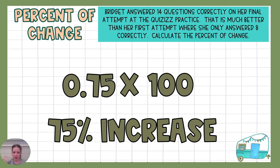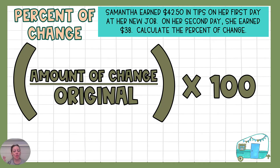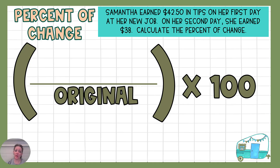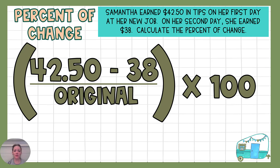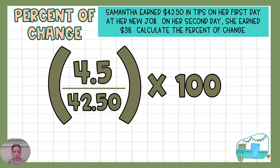What happens, though, when it doesn't get better — when it's not an increase? Let's take a look at Samantha. She earned $42.50 in tips on her first day at her new job. On her second day she earned $38. Calculate the percent of change. Everything's going to be the same — we find the amount of change, the difference between $42.50 and $38, and divide by the original number, her tips on that first day, which is $42.50. $42.50 minus $38 is $4.50.